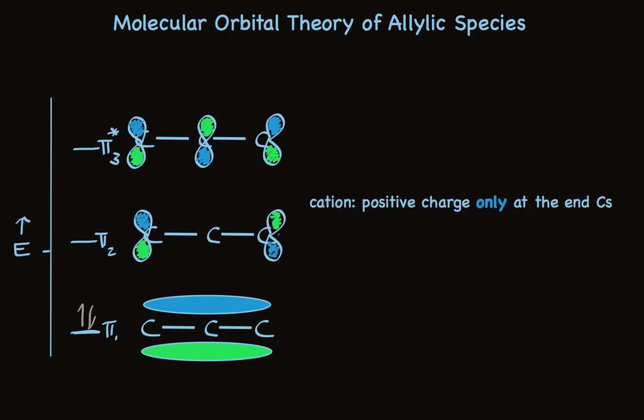It's the same picture we get from our Lewis bonding theory, resonance structures. If we have one more electron, we have the allylic radical. It will be in the non-bonding orbital. And that radical will have a probability of being found at the end carbon or the other end carbon, but never at the center. Again, this looks just like our Lewis-Bond theory resonance structure picture.